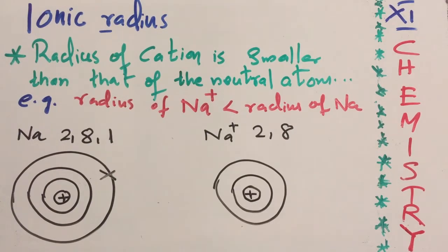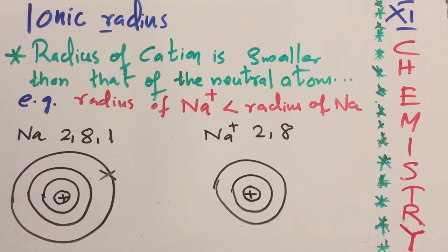The radius of ions is called ionic radius. Ions are mainly formed from atoms — when atoms lose electrons they form cations, and when atoms gain electrons they form anions. We are going to compare the radius of an anion and the radius of a cation with their parent atom.